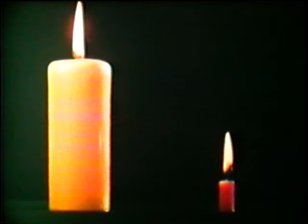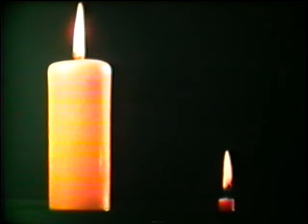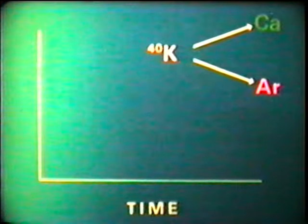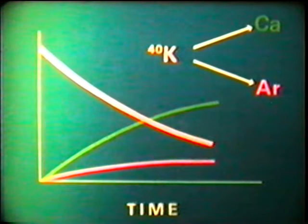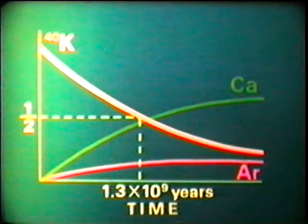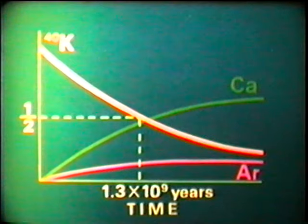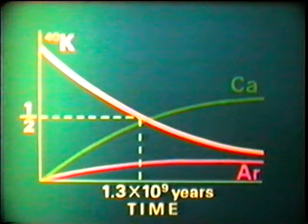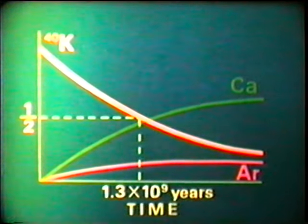This slower-running clock is provided by the radioactive element potassium-40. Potassium-40 slowly decays to calcium-40 and argon-40. The rate at which potassium-40 decreases and calcium and argon increase in a substance is known. Potassium-40's half-life is 1,300,000,000 years — far longer than carbon-14's. Potassium-40 is very common in igneous rock. Using what is called the potassium-argon dating method, we can find out, for instance, how long ago a volcanic eruption took place.